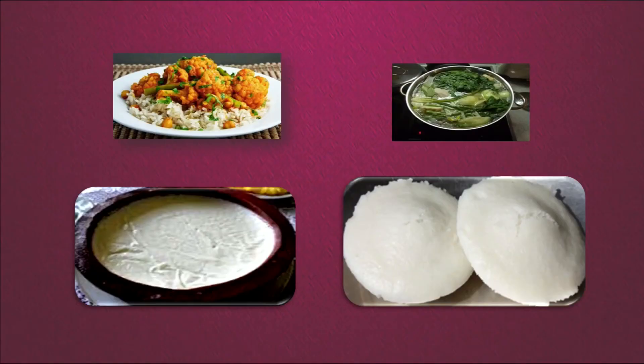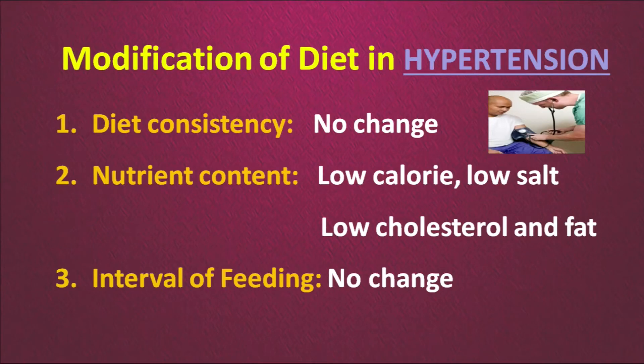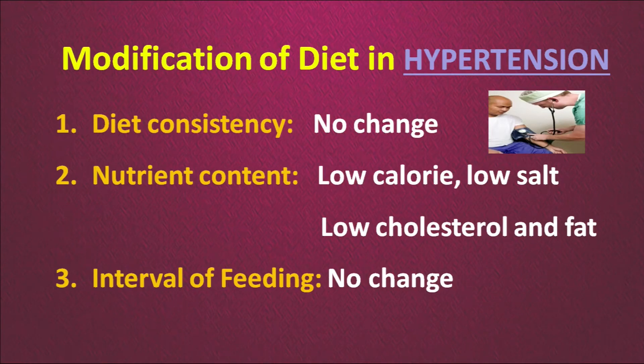These are foods you can have: a full simple meal, steamed green leafy vegetables, curd, idli, or poached egg. Another problem many people face today is hypertension. There is no change required in diet consistency — you can have a normal meal — but there is a change in nutrient content: low calorie, low salt, low cholesterol, and low fat diet is prescribed during hypertension. There is also no change in the interval of feeding.